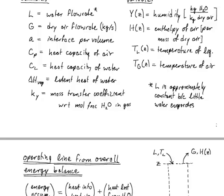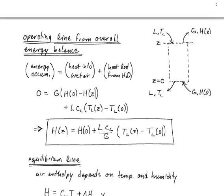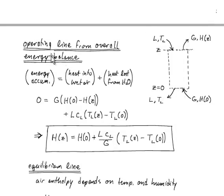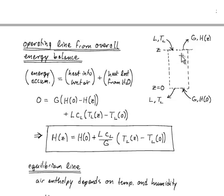This description of a cooling tower involves a few different balance equations. We start with an overall energy balance to obtain what we call an operating line. The control volume encloses the entire tower, with a hot liquid stream entering the top and cool liquid leaving the bottom, and dry air entering the bottom and moist air leaving the top. At steady state, energy accumulated in the control volume is zero.